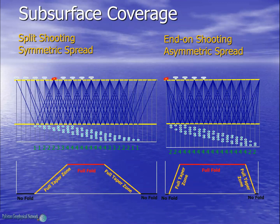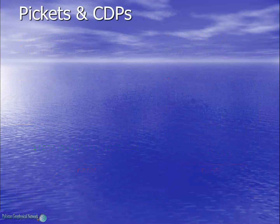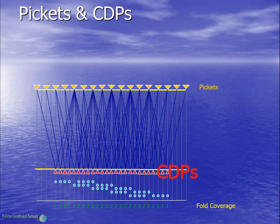We can see that the split shooting spread has a larger no-fold region at the two ends and the fold build-up is slower. On the other hand, the end-on shooting spread has a much smaller no-fold region and fold builds up quickly, with a much larger fold coverage region. Thus end-on shooting is preferred over split shooting. Let's now consider the link between pickets and common depth points (CDPs), which are the reflection points in the subsurface.